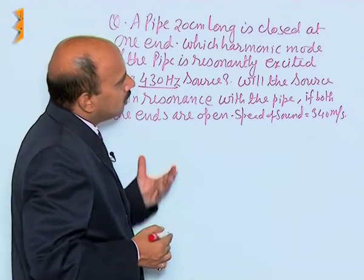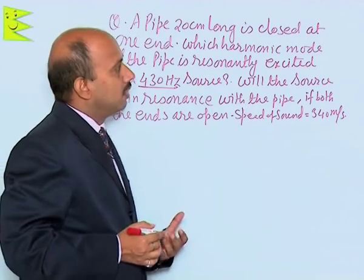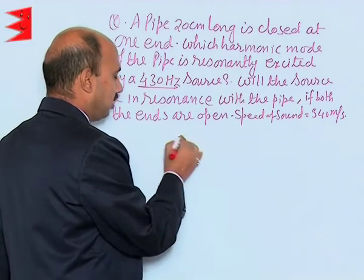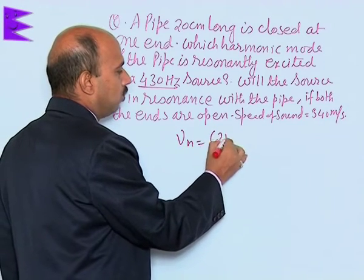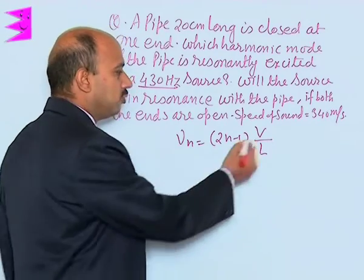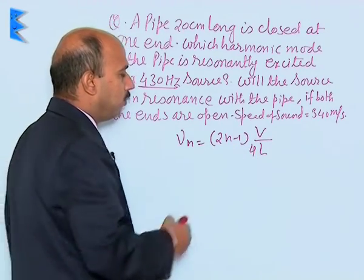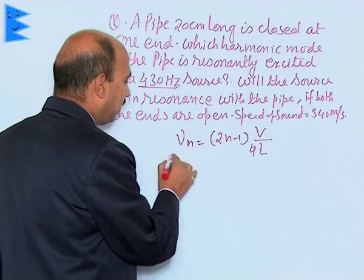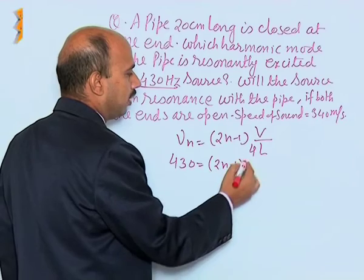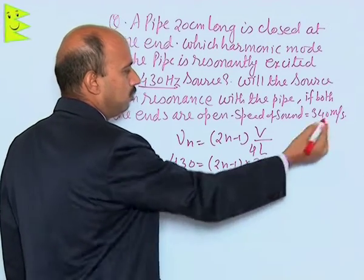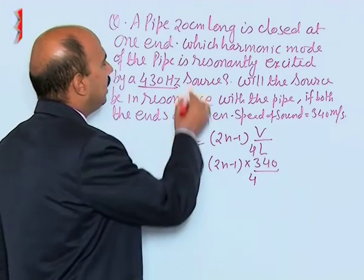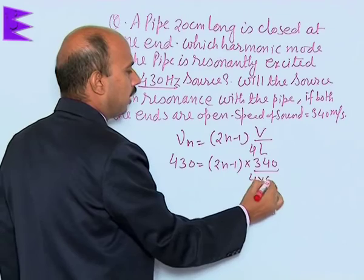In the case of the closed organ pipe, the fundamental frequency for the nth mode of vibration is given by: ν_n = (2n − 1) × V / (4L), where V is the speed of sound, L is the length, and n is the number of modes. Substituting: 430 = (2n − 1) × 340 / (4 × 0.2 meter).